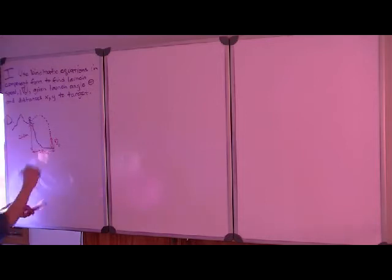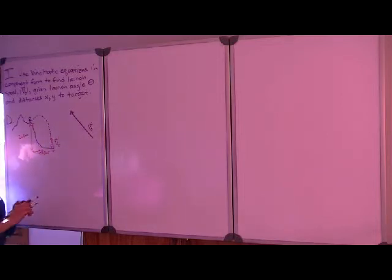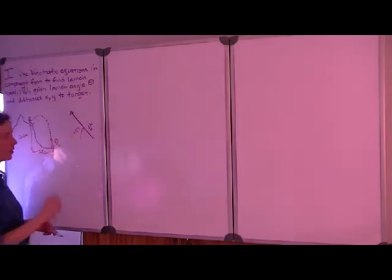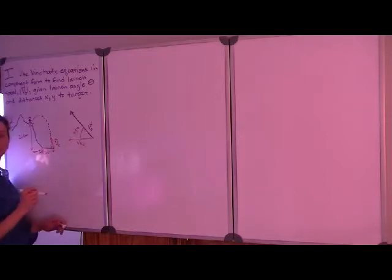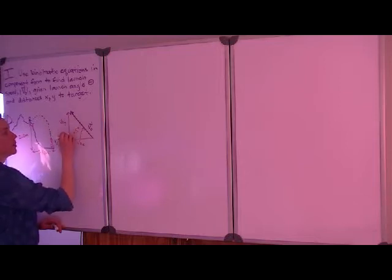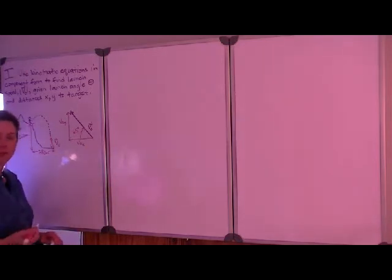Let's take a closer look at that launch angle and the initial velocity. We are told that the angle of launch is 65 degrees with respect to the horizontal. The horizontal component of the velocity, which we can call v0x, and the vertical component we can call v0y. We'll establish relationships between the components and the initial vector in a few moments.